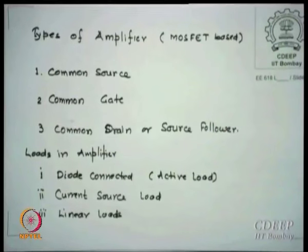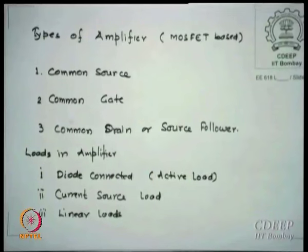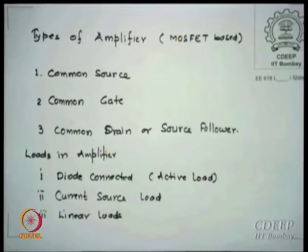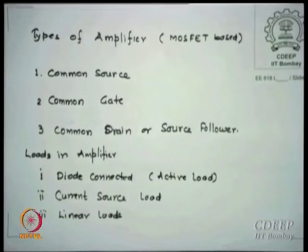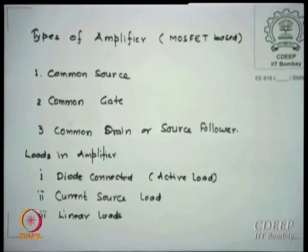We start with cascode code — I have already given material so you can read that. For today's class and Friday, let me finish because I want to use these for the test. The three common amplifiers which all of us use in a variety of applications are common source, common gate, and common drain — also popularly known as source followers.